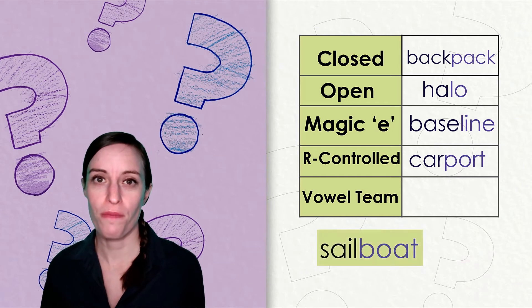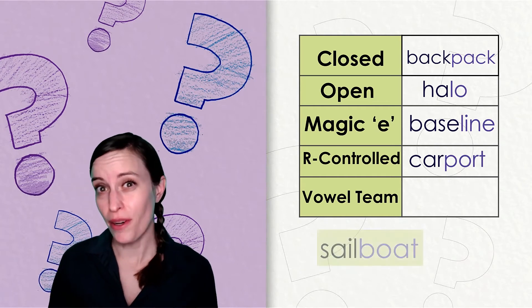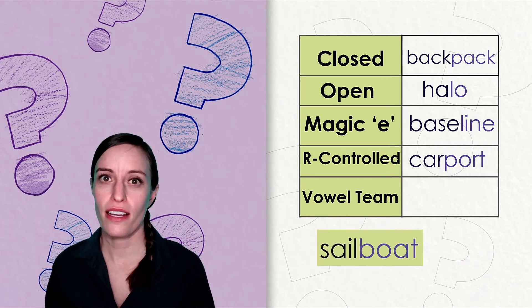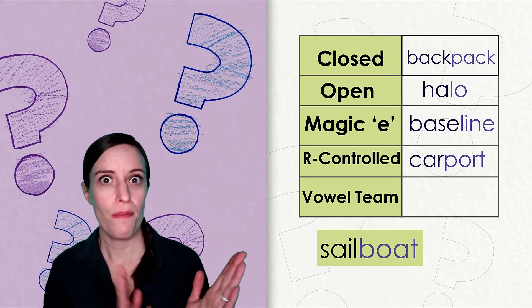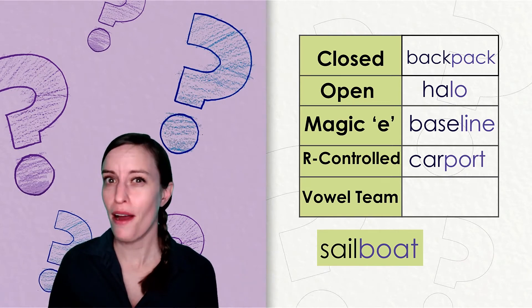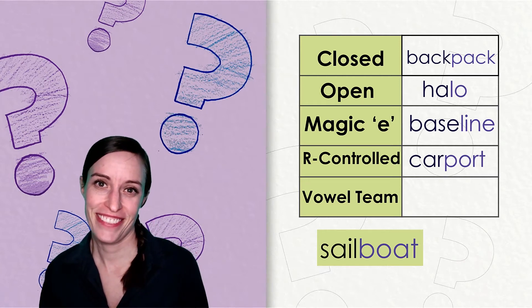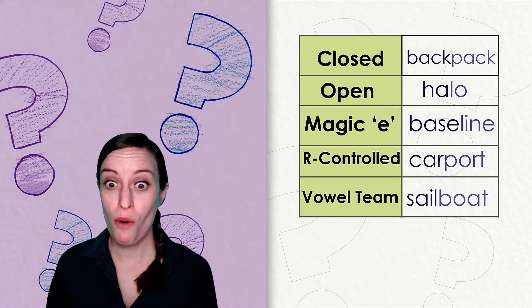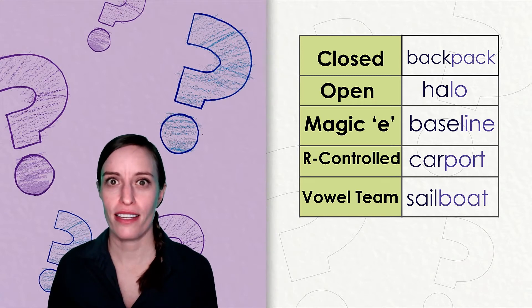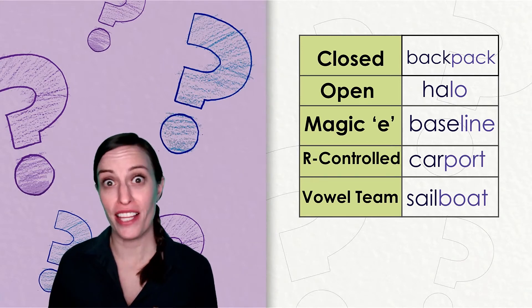Both syllables have r-controlled vowels in them. Car says ar and port has the r-controlled vowel or. Just one more to go. Our last word is sailboat: sail-boat. What syllable type are both of those syllables? They are both vowel team syllables. Nice job sorting those words with me.